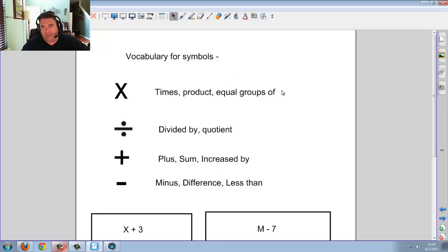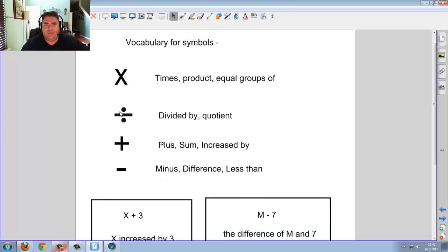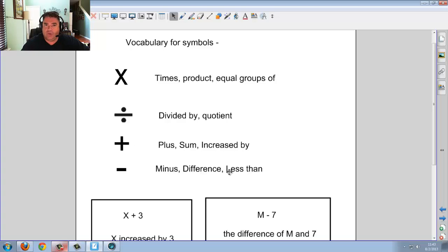Vocabulary for some basic stuff I know, but we need to cover it. Times: you look at is called times, product, equal groups of. Divide: divided by, or the word quotient, because quotient also means divide by. Plus sign is plus, sum, or increased by. The minus is minus, difference, or less than.